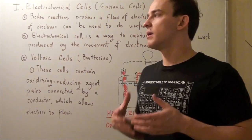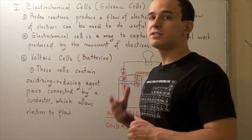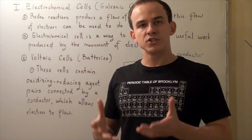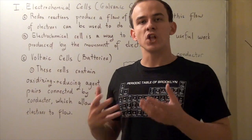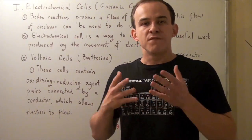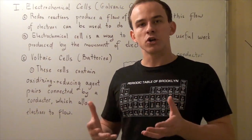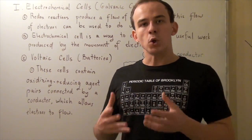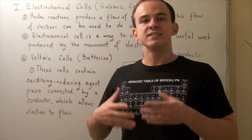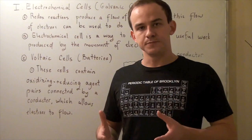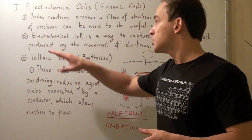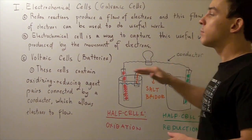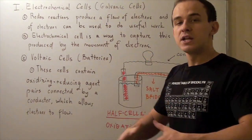In this lecture, we're going to talk about something called electrochemical cells, also known as galvanic cells. Recall that redox reactions are chemical reactions in which electrons flow from one atom to another. From physics, we know that moving charge, such as electrons, can be used to do useful work. Therefore, the flow of electrons found in redox reactions can somehow be transformed to do useful work. So an electrochemical cell is simply a way to capture this useful work produced by the movement of electrons from one atom to another.